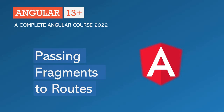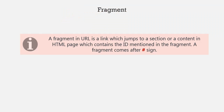In the last two lectures, we learned about route parameters as well as query parameters. Now, in this lecture, let's learn what is a fragment in a route. A fragment in a route is nothing but a link which jumps to a section or content in an HTML page which contains the ID mentioned in the fragment.